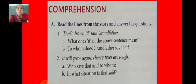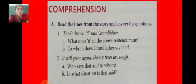A. Read the lines from the story and answer the questions. Number 1: 'Don't drown it,' said grandfather. A. What does 'it' in the above sentence mean? It refers to a small cherry tree. B. To whom does grandfather say that? Grandfather says that to his grandson, Rakesh.